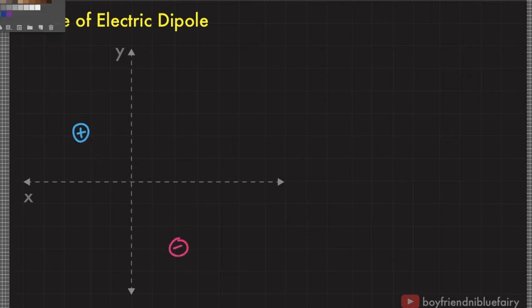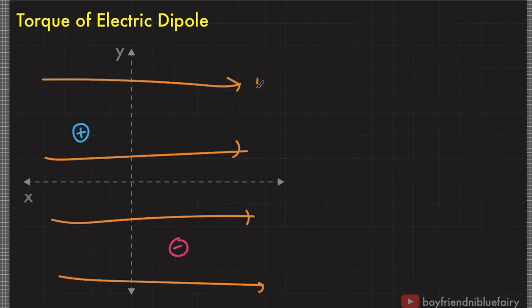Consider this electric dipole submerged in an electric field E. From the previous video, I already introduced the electric dipole moment, which has a direction from negative Q to positive Q.